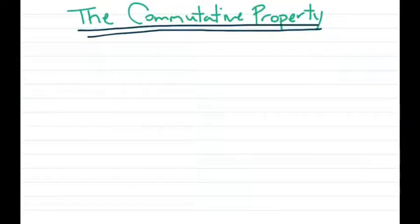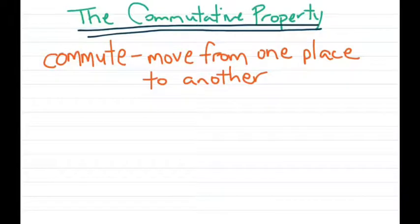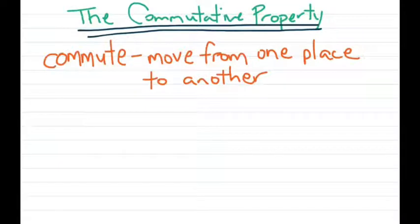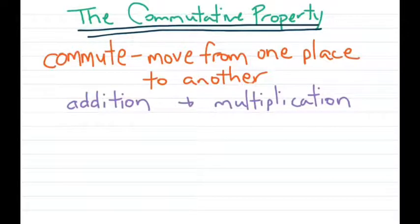First up, let's talk about the commutative property. That word commutative comes from the word commute, which means to move from one place to another, like how you commute from your house to school every day. In math, this property works when you're dealing with addition and multiplication.